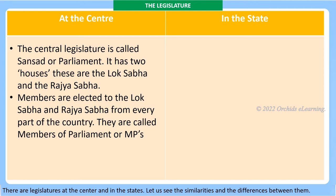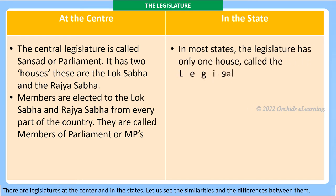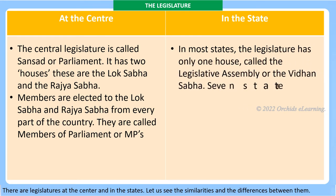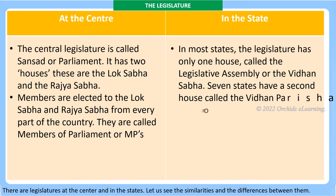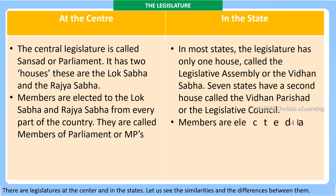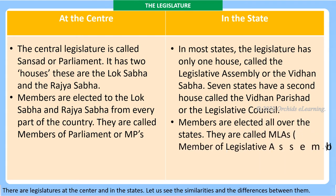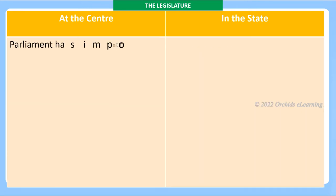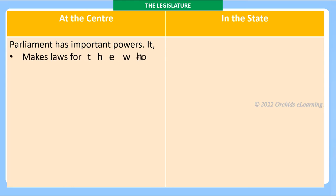In the states, the legislature in most states has only one house called the Legislative Assembly or Vidhan Sabha. Seven states have a second house called the Vidhan Parishad or the Legislative Council. Members are elected all over the states and are called MLAs — Members of Legislative Assembly. Parliament has important powers: it makes laws for the whole country.